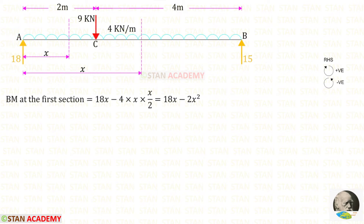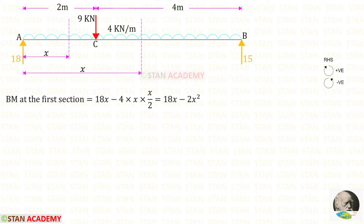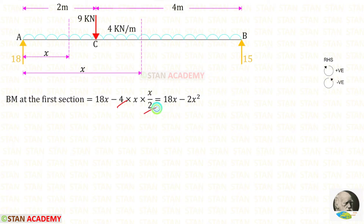Now we are going to find the moments at the sections, measured from point A using the right hand side rule — clockwise positive, anti-clockwise negative. For the first section: RA is clockwise, positive, at distance x, giving 18x. The UDL 4 kN/m is anti-clockwise, negative; multiplying with distance over 2 gives 2x². So the moment in the first section is 18x minus 2x².